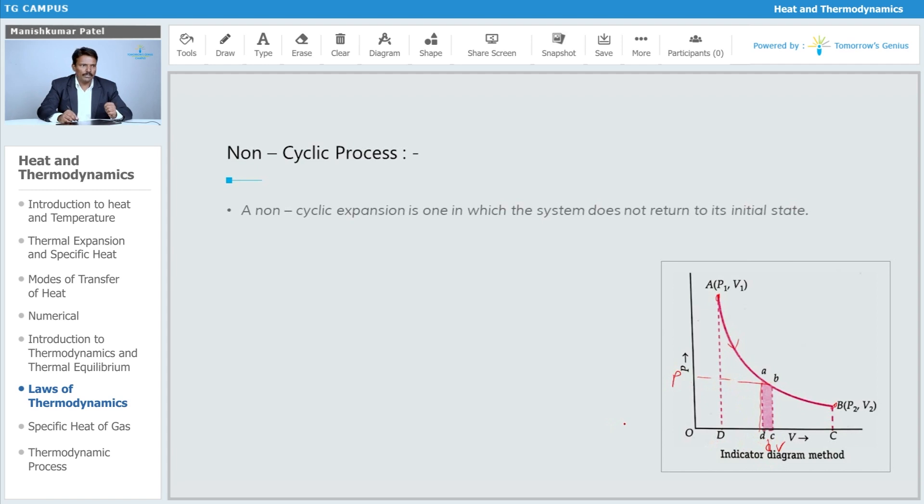So the dW for this you can write as nothing but P dV. Likewise, you have to take the area. This area is nothing but P dV. You have to find the work done for all of them.